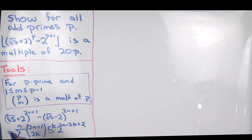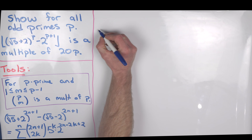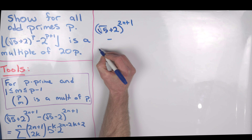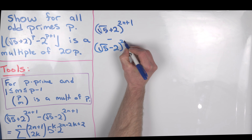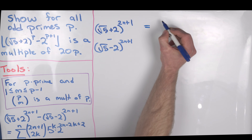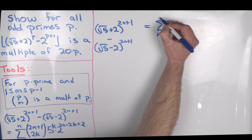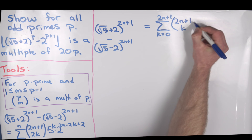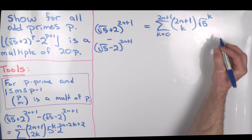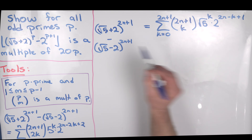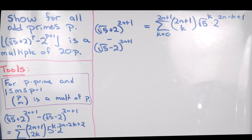Let's jump into the solution. To prove this tool, I'll use a binomial expansion formula. So let's take the square root of 5 plus 2 to the 2n plus 1, minus the square root of 5 minus 2 to the 2n plus 1, and expand each using the binomial theorem. We expand the first one as the sum as k goes from 0 up to 2n plus 1 of the binomial coefficient 2n plus 1 choose k, times the square root of 5 to the k, times 2 to the 2n minus k plus 1.